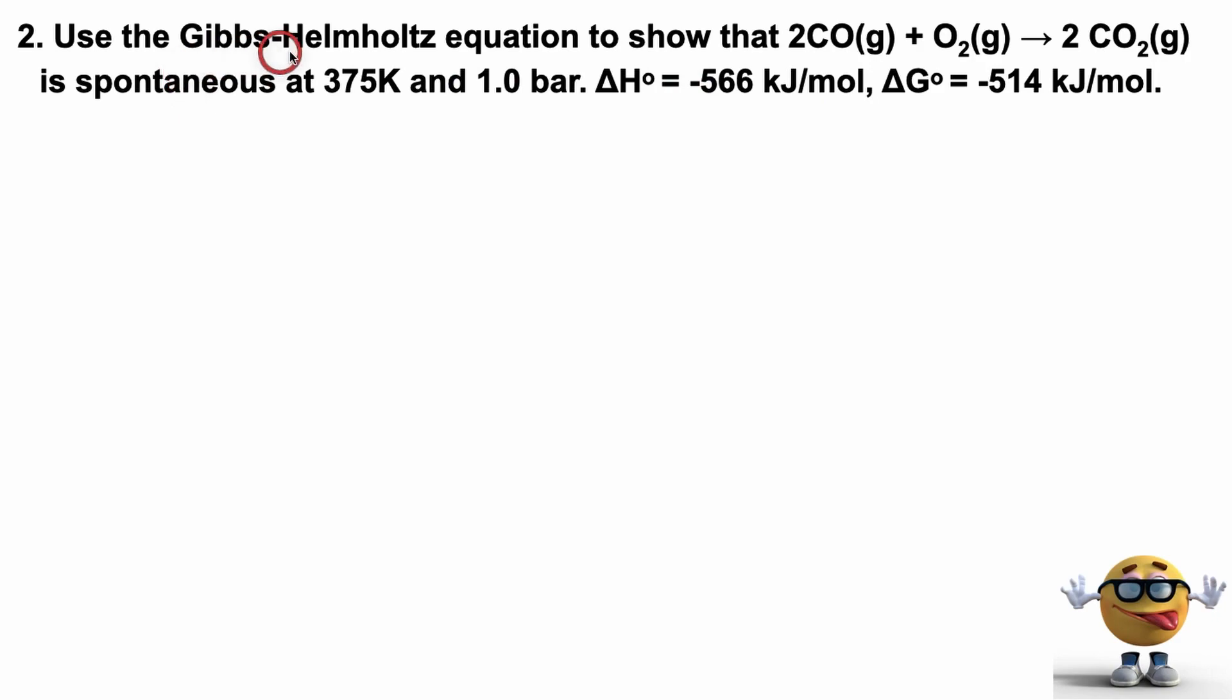Okay, so we're going to find out, we want to calculate, well we want to know that this is spontaneous. So it's spontaneous if delta G is negative at this temperature. So we need to know the value or the sign of delta G at this temperature.